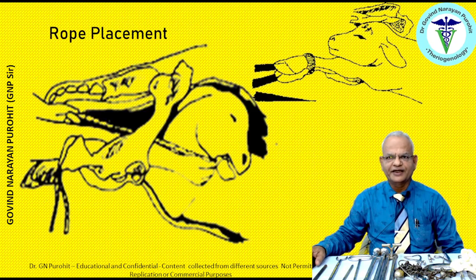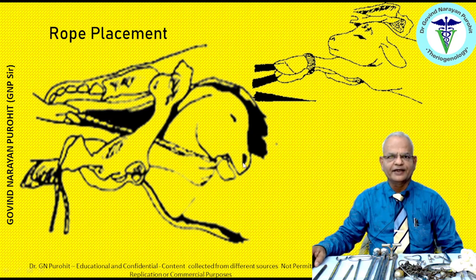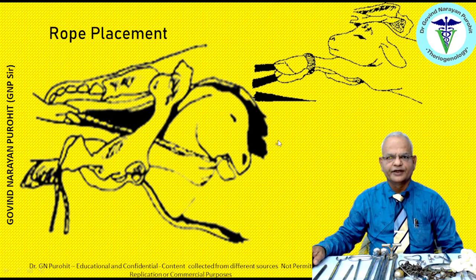For rope placement on the legs, it is always better to place ropes separately on both legs and then pull the fetus. It is not advisable to pull the fetus unless the head is resting on the knees in anterior longitudinal presentation. Rope placement on the lower jaw is not advisable because the calf's lower jaw is very soft, may break, and cause serious injury to the fetus which will be difficult to repair.